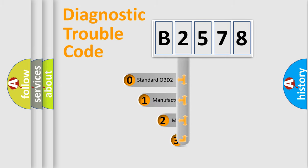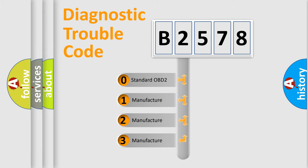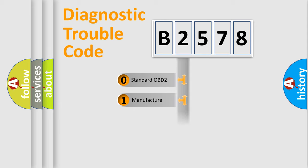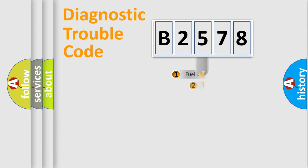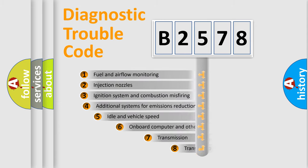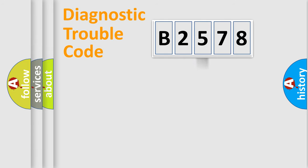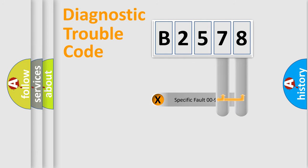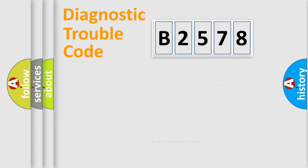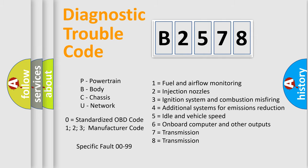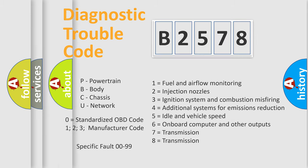This distribution is defined in the first character of the code. If the second character is expressed as zero, it is a standardized error. In the case of numbers 1, 2, 3, it is a more specific expression of the car-specific error. The third character specifies a subset of errors. This distribution is valid only for the standardized DTC code, and only if the second character is expressed by the number zero.